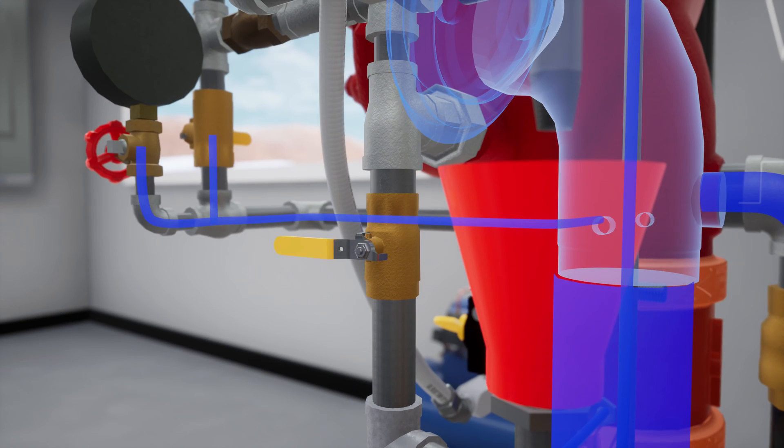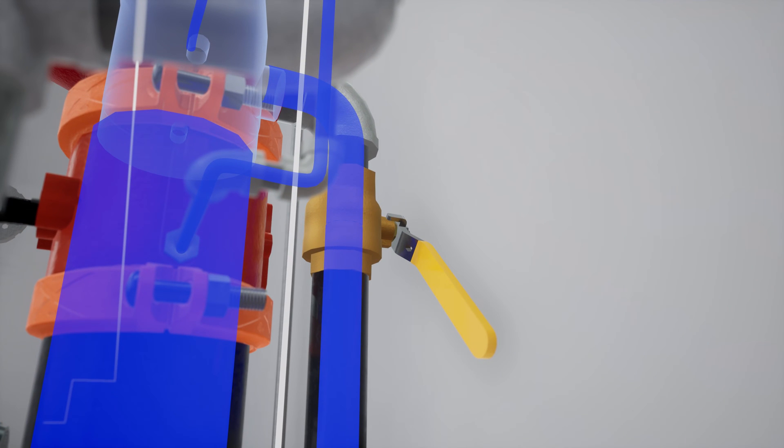Open the auxiliary drain and verify that there is no water flow. Close the auxiliary drain. Once flow has been established, close the flow test valve.